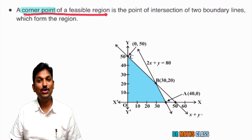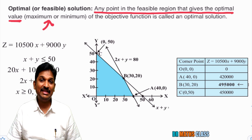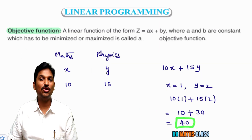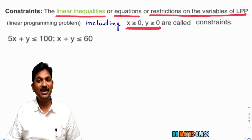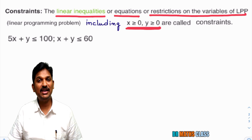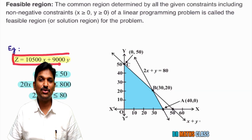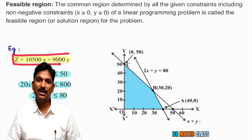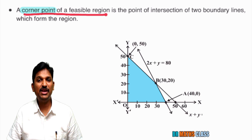In class 11, you learn the chapter on linear inequalities. That knowledge is useful in linear programming problems. In the second class, I'll quickly recall all the knowledge from linear inequalities. In this first class, we are going to learn definitions related to linear programming problems. These are a little confusing, but after doing one or two problems in the exercise, you can understand them very easily.